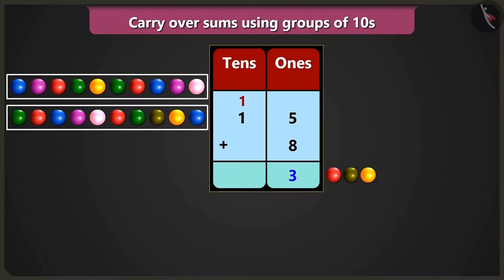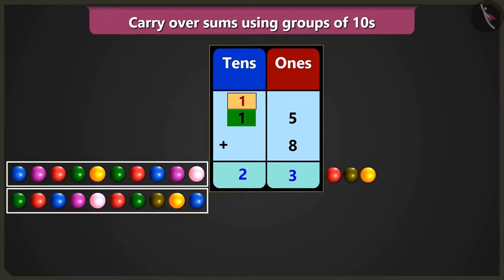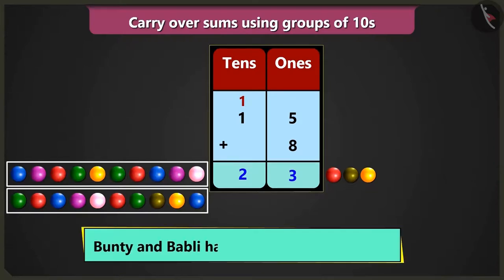Yes, so in the box of tens, when we add 1 tens and another 1 tens, we will get 2 tens, that is 20. This means we earlier had 2 tens and 3 ones, that is 23 marbles.